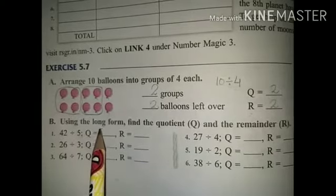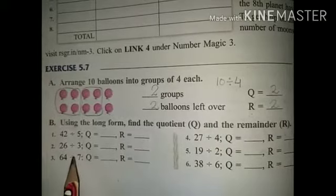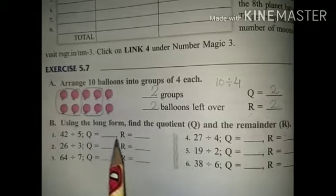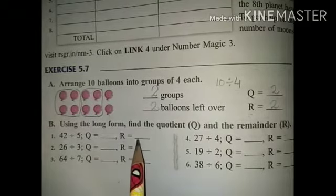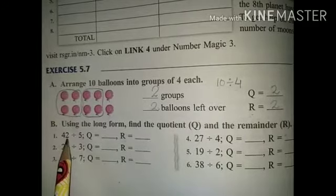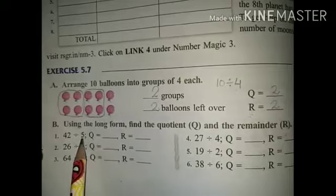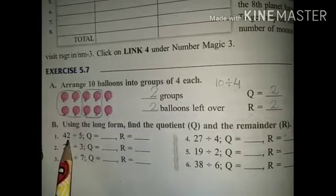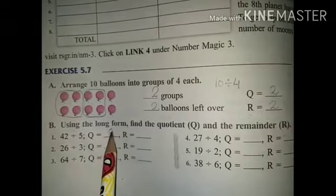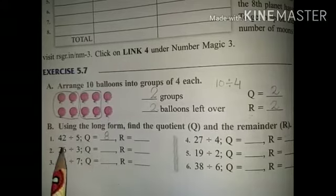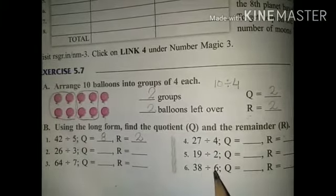Using the long division method, find the quotient and remainder for these questions. Solve in your notebook. First question: 42 divided by 5. If we divide 42 by 5 — 5 times 8 is 40 — the quotient will be 8. The remainder will be 2.